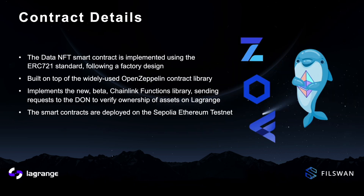The data NFT smart contract is implemented using the ERC721 standard while also following a factory design. It's built on top of the widely used OpenZeppelin contract library and implements the Chainlink functions library, sending the request to the decentralized oracle network to verify ownership of assets on Lagrange.